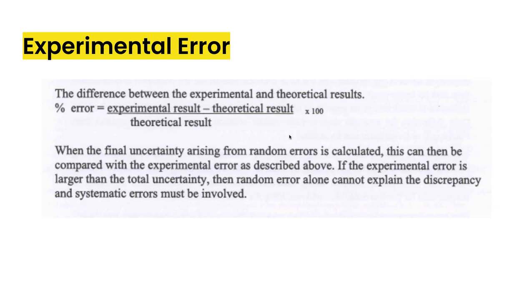And what's nice about this calculation then is you can take this percent error and you can look at whether it's larger or not than the total uncertainty in your measurement. If the experimental error is larger, then random error alone can't explain the discrepancy. And so what that means is systematic errors must be involved. So that allows you to go back and identify maybe what some of those systematic errors might be.